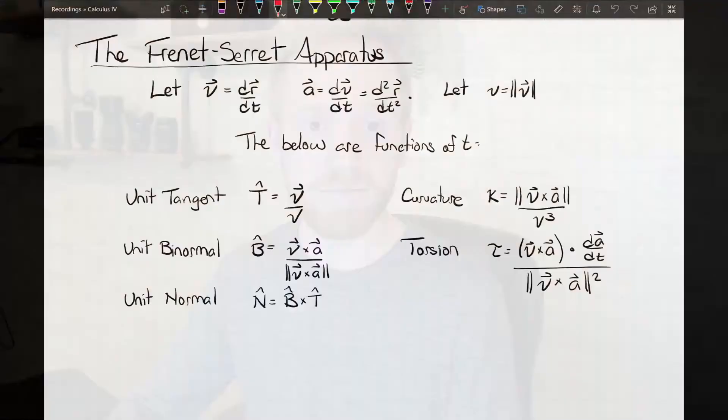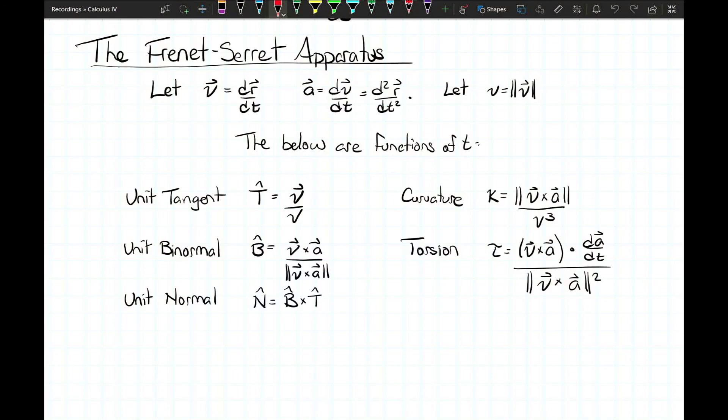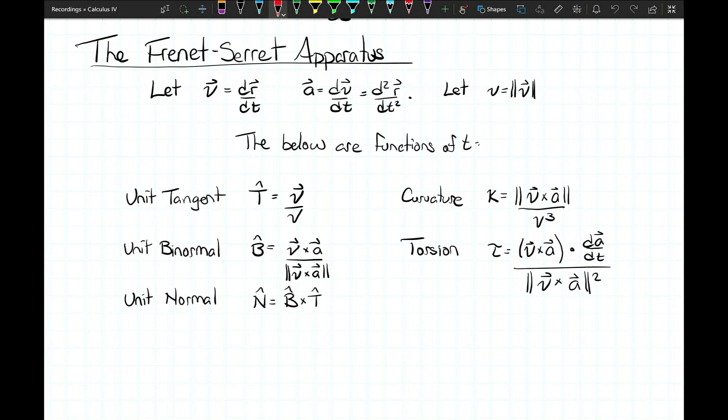Hopefully that gives you at least a visual aid for the Frenet-Serret apparatus. The calculations are all there — whatever your favorite curve is, you can use the first and second derivatives in those formulas to calculate the unit tangent, unit binormal, unit normal vectors, and then curvature and torsion as two scalars. That will help to completely describe a particular curve. Thanks for watching. I'll see you in the next video.